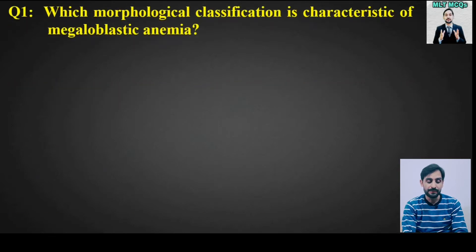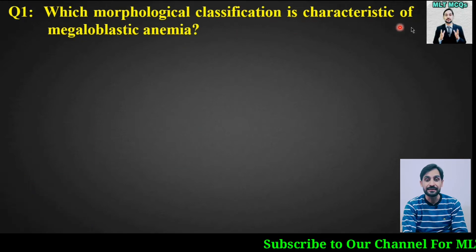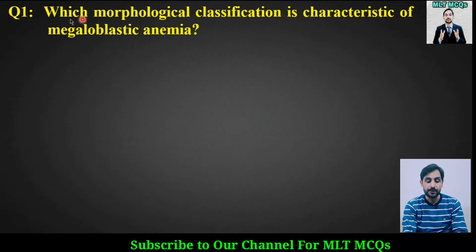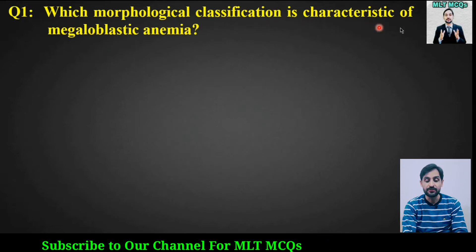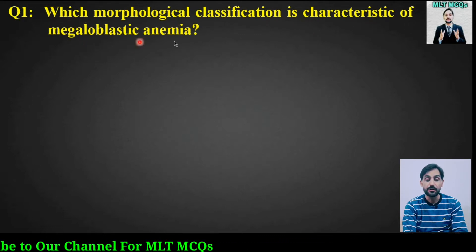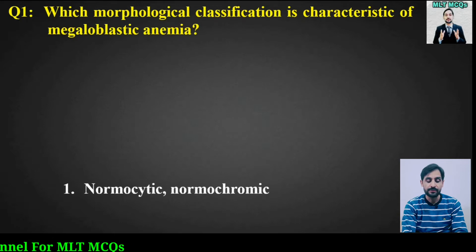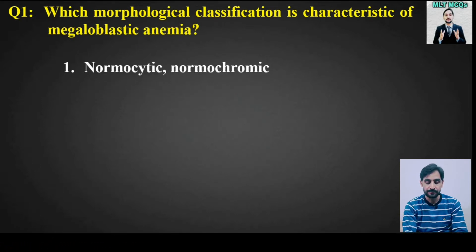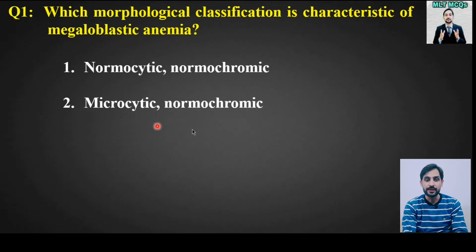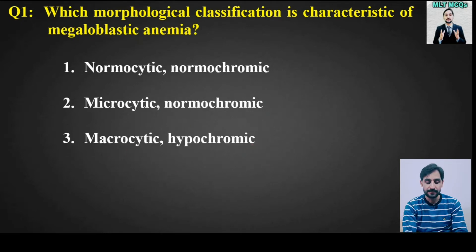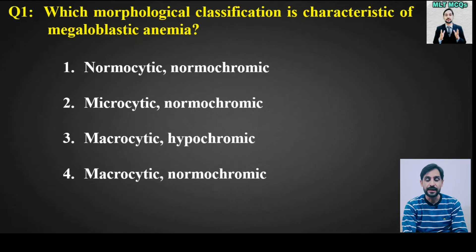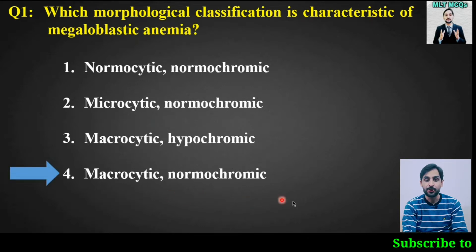MCQ number 1: Which morphological classification is characteristic of megaloblastic anemia? Options are normocytic normochromic, microcytic normochromic, macrocytic hypochromic, or macrocytic normochromic. The right answer is option number 4: macrocytic normochromic.